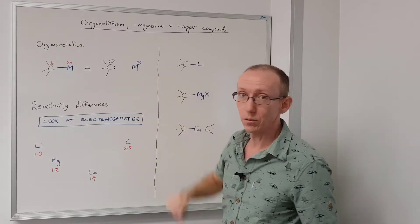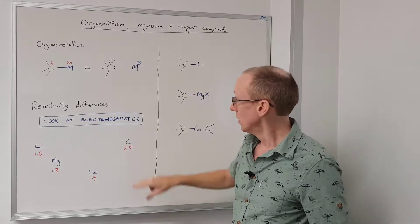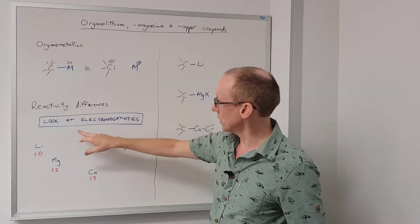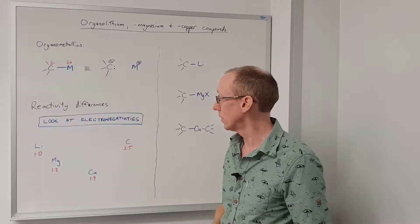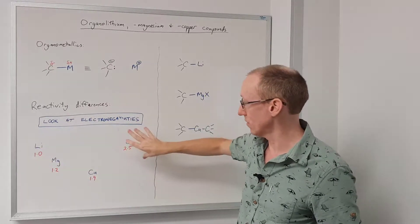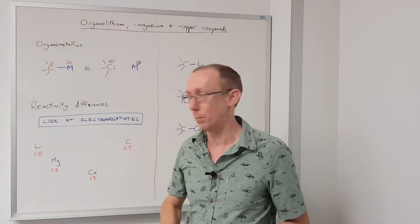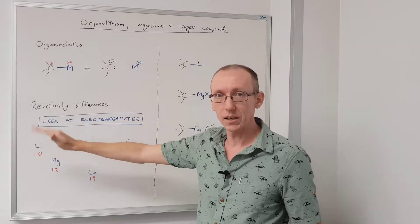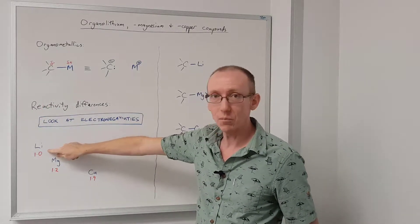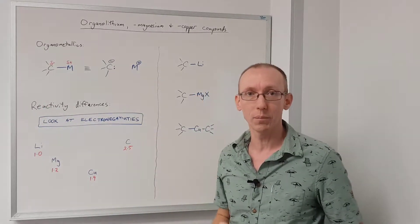So what does the metal tell us about the reactivity? If we look at reactivity differences, we want to look at the electronegativities of the atoms involved. I've drawn this out in roughly the right places where the atoms come in the periodic table. So right on the very left-hand side towards the top is lithium, which has an electronegativity of 1.0.